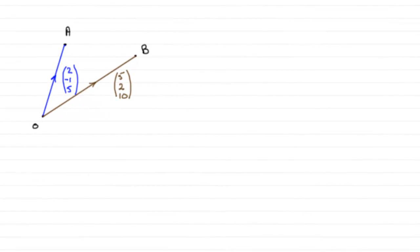For this first part of the question, what I'd encourage you to do is always draw sketches for vector questions. As this question develops you'll see that we definitely need a sketch. I've got my points A and B and the origin here — you can put A and B absolutely anywhere.